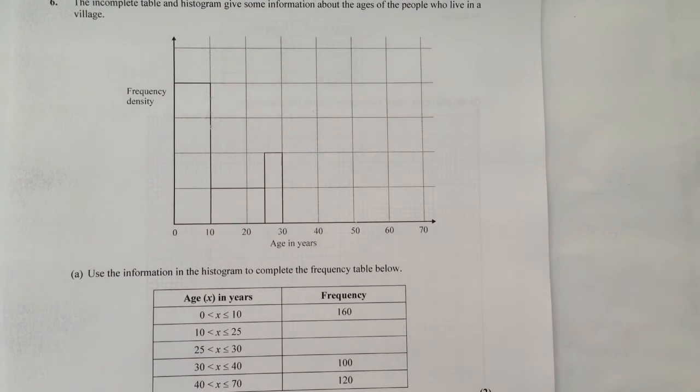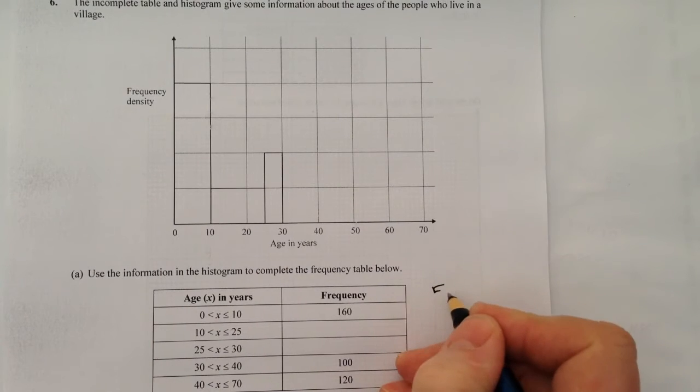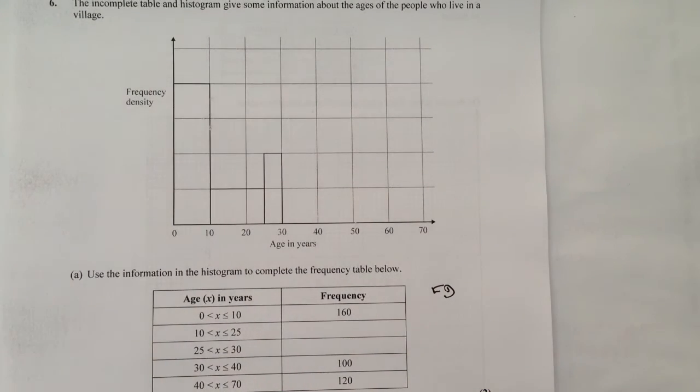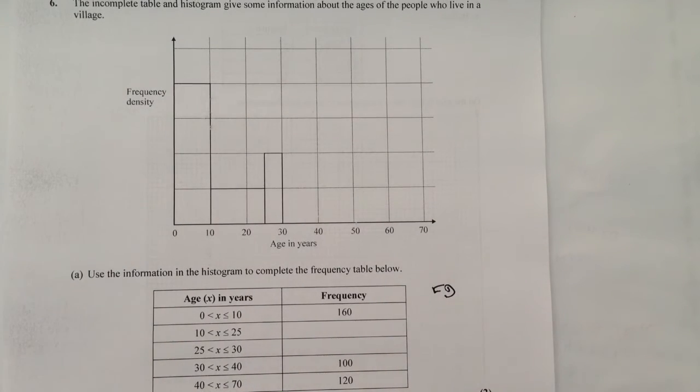OK, so I'm going to approach this as I would do normally. I'm going to work out the frequency density, because it's going to be very important for my left hand side axis, my vertical axis. So the first one is frequency density equals frequency divided by class width. So it's going to be 160 divided by 10 equals 16.